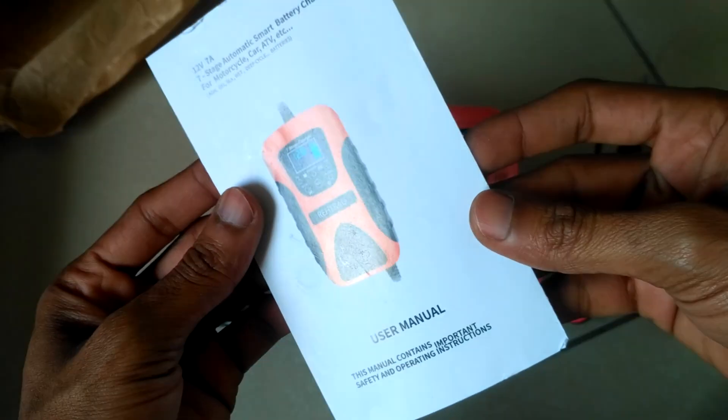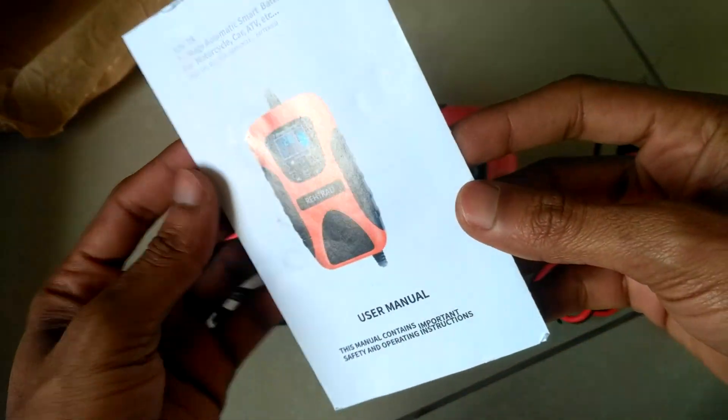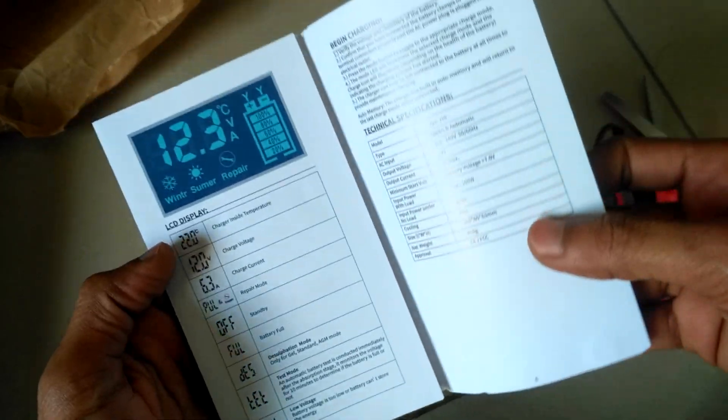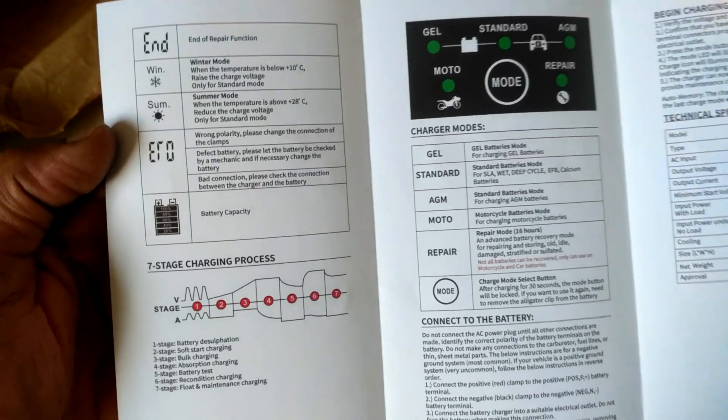In the user manual they mentioned how it works and how to use it with the display codes. It has a 7-stage charger. Before it begins charging, it will test the battery for about 10 minutes.